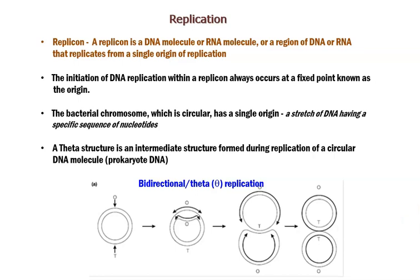The initiation of DNA replication within a replicon occurs at a fixed point known as the origin. The bacterial chromosome is circular and has a single origin of replication from which replication starts. This single origin of replication refers to a stretch of DNA that possesses specific nucleotides — for example, the oriC site, which is present in the origin of replication in E. coli cells.